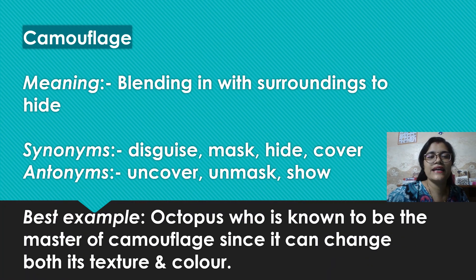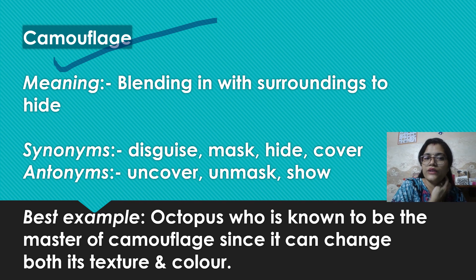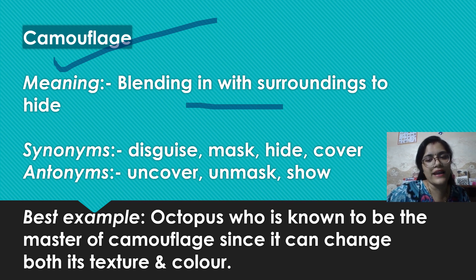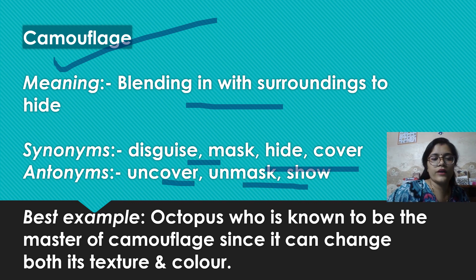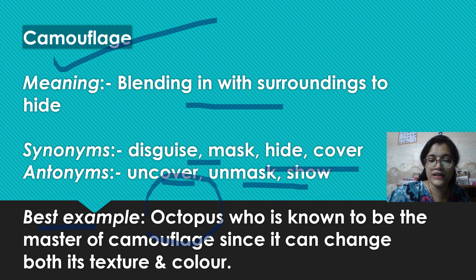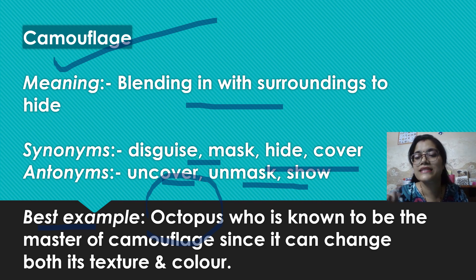Okay, next word is camouflage. Guys, camouflage jo hai, yih mostly aise animals ya species ke liye use hota hai jo kaafi aasani se apna texture ya apni positioning ya color change kar lete hain — apne surroundings ke according. Iska matlab hota hai: blending in with the surroundings to hide. Synonyms: disguise, mask, hide, ya phir cover. Antonyms: uncover, unmask, ya phir to show. Best example: the octopus, because it is known to be the master of camouflage, kyunki woh apna texture as well as apna color change kar leta hai apne surroundings ke according.